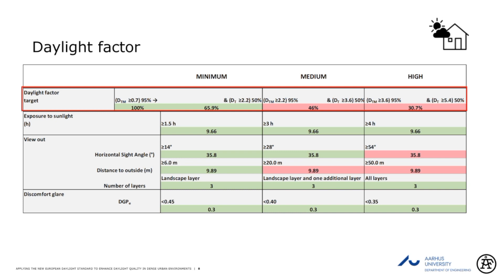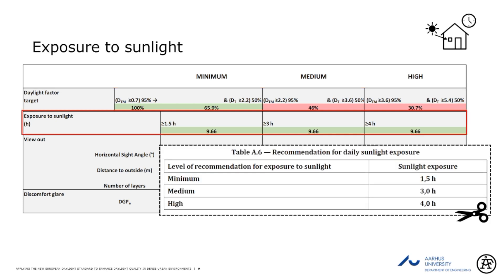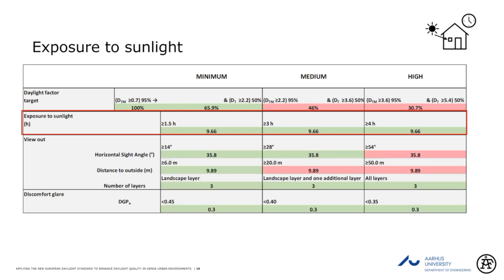We also look at the other factors one by one. The next one is the recommendation for daily sunlight exposure, where we have minimum, medium, and high levels. These are the hours that we have, using the measurement point in front of the facade. For example, we have 9.66 hours for that particular point, so we're fulfilling that and it stays green.